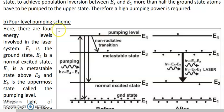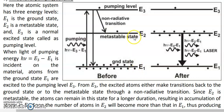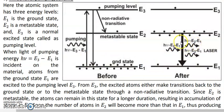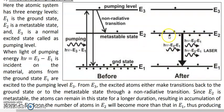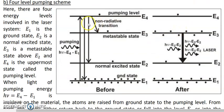In the previous lecture we talked about the three level pumping scheme with energy levels E1, E2, and E3, and we saw how population inversion is achieved. The drawback was that it required very high pumping power because more than half the ground state atoms had to be moved into the metastable state E2. Today we will see how the four level pumping scheme addresses this drawback.